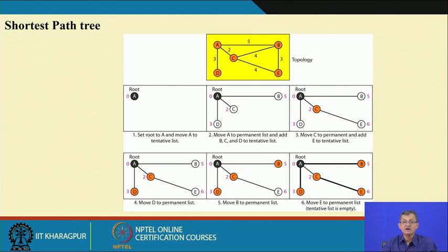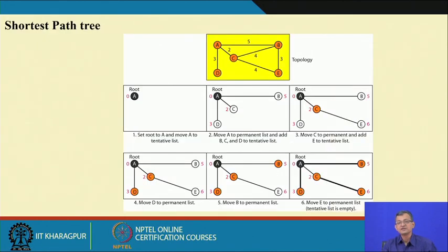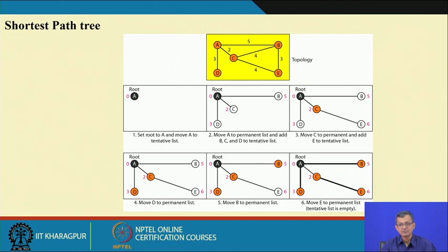The shortest path tree looks like: initially set the root to A and move to the tentative list; move A to the permanent list and add C; move C to the permanent list because it is the least-cost path from A, and so on, until the tentative list is empty and the algorithm stops. This can be used for updating the routing table and forwarding packets to the next hop to reach the destination.